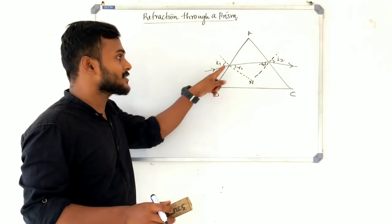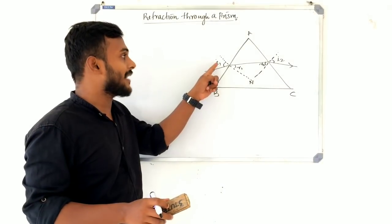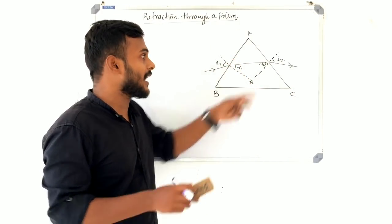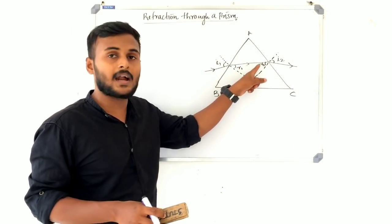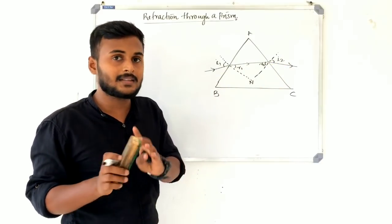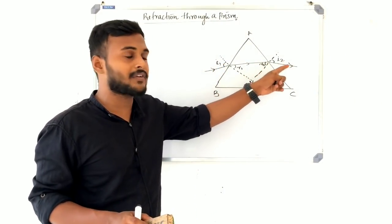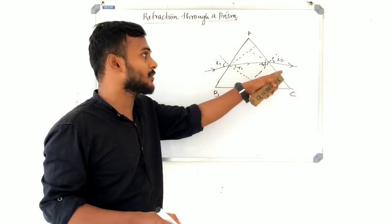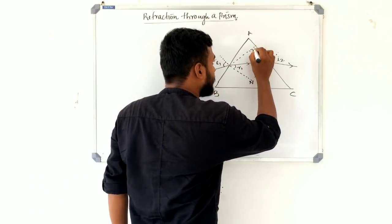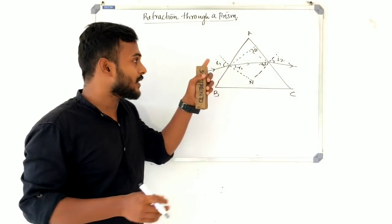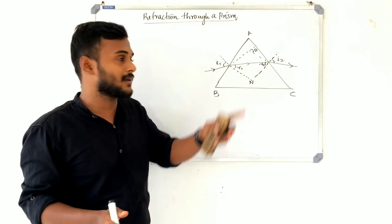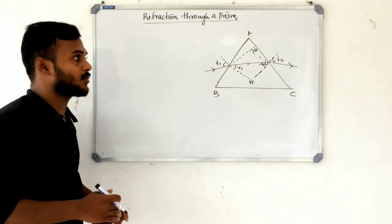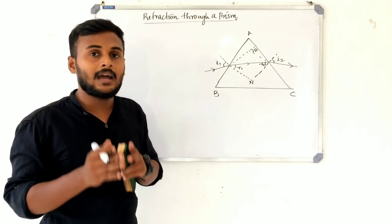This is important. The incident ray and the emergent ray, when extended, meet at a point. We connect them with a dotted line and get the angle of deviation D. The deviation at face AB equals I1 minus R1 — this is equation number 1. The total deviation D equals I1 plus I2 minus R1 minus R2 — this is equation number 4.